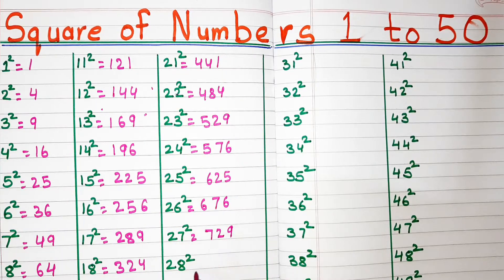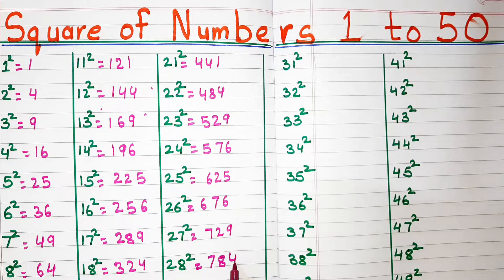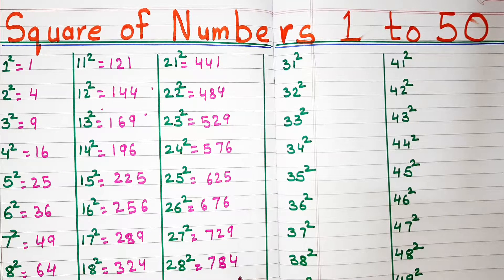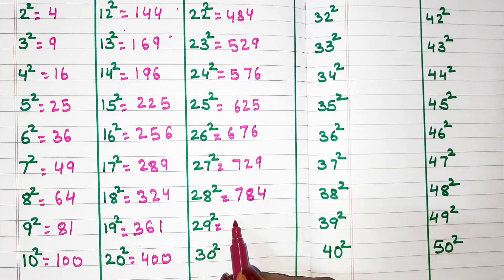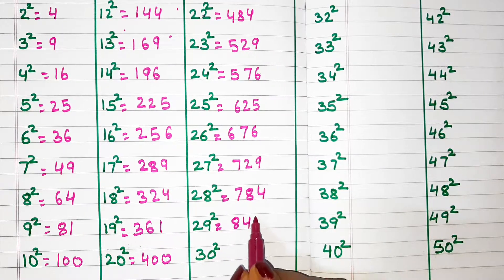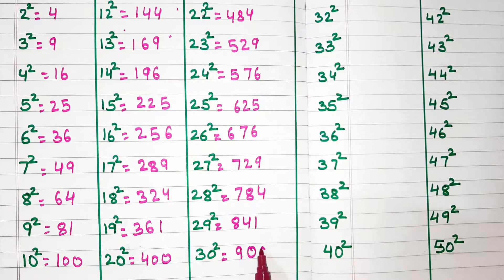Square of 28, 784. Square of 29, 841. Square of 30, 900.